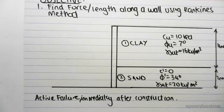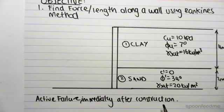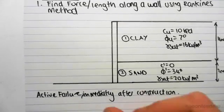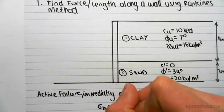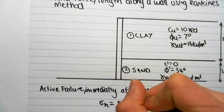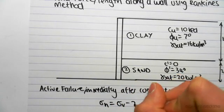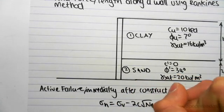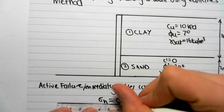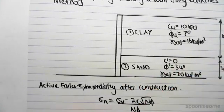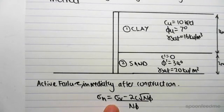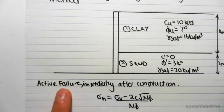We're then told that we have an active failure immediately after construction. So we know that for active failure, we use the formula: SigmaH equals SigmaV minus 2C square root of N subscript Phi over N subscript Phi. So that formula is going to be used throughout this example because we have an active failure.